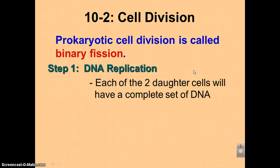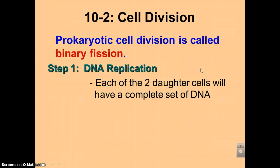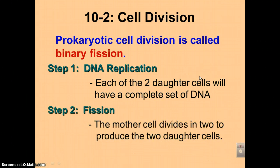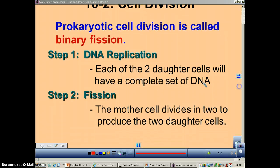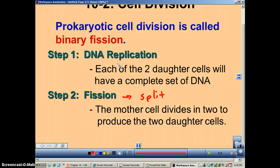Now the first step of this binary fission is DNA replication, because each of the two daughter cells needs to have a complete set of DNA. Each daughter cell needs to be able to make all the proteins that are required to survive. Step number two is fission — remember, fission means simply to split. So they'll split in two. You've replicated the DNA so that each daughter cell has a complete set of life's instructions, and then you simply divide into two.